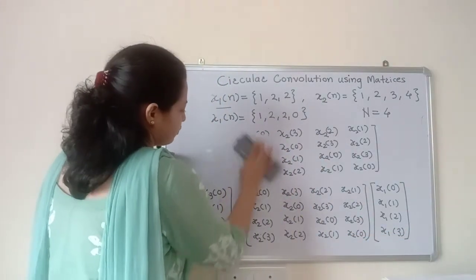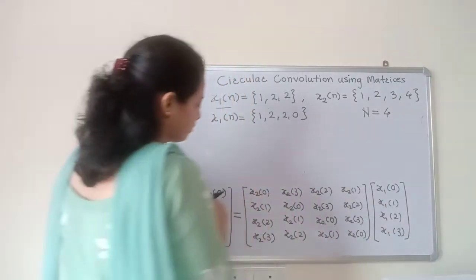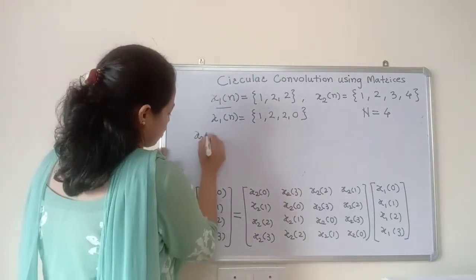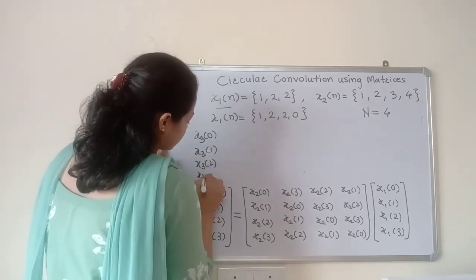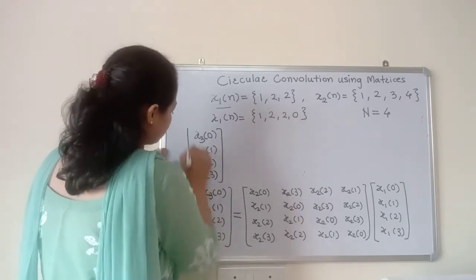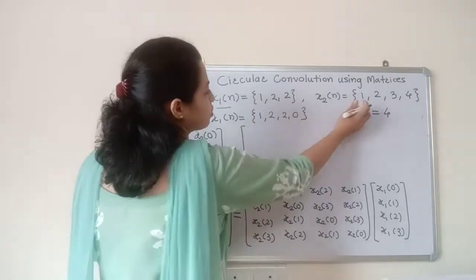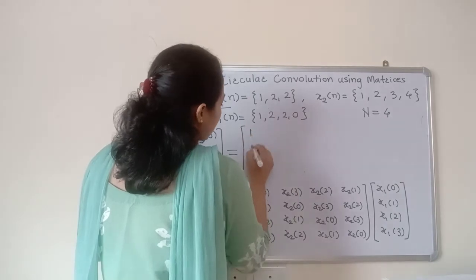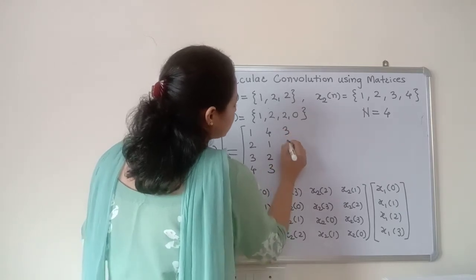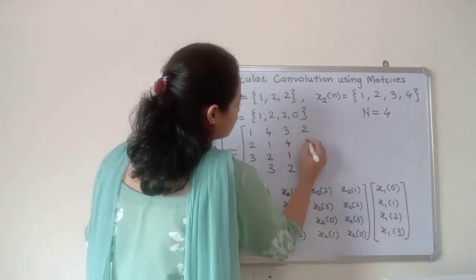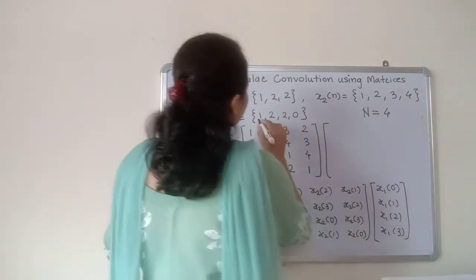Now we will solve the example. x3 of 0, x3 of 1, x3 of 2, x3 of 3 — these four samples equal the circulant matrix formed from x2 of n multiplied by x1 of n. The circulant matrix rows are: 1, 2, 3, 4; then 4, 1, 2, 3; then 3, 4, 1, 2; then 2, 3, 4, 1. The column vector for x1 of n is 1, 2, 2, 0.